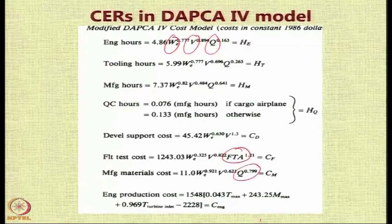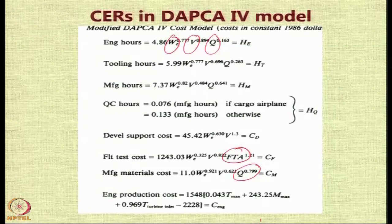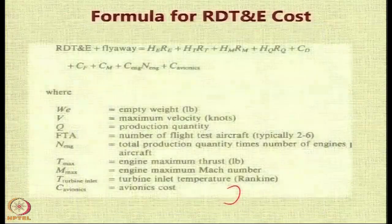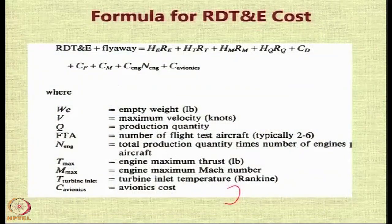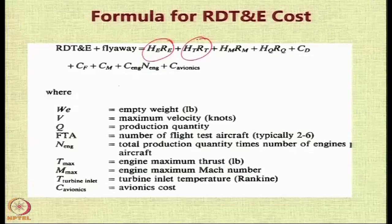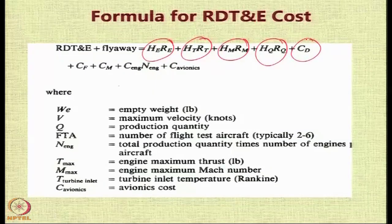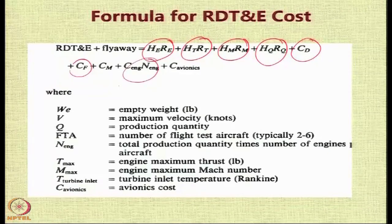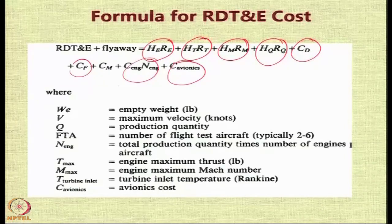The quantity of aircraft to be produced also comes into play when looking at manufacturing material cost. Looking at the combination of all parameters — engineering, tooling, manufacturing, quality control, and equipment including flight testing — along with number of engines multiplied by cost per engine, and avionics, when you add all of these together you get the RDT&E and the flyaway cost.